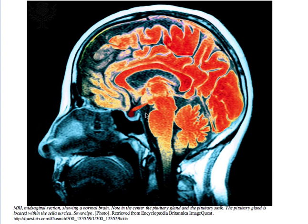A mid-sagittal section of the human brain shows the master control switch, which regulates many processes in sexually mature females. A chemical message from the anterior pituitary gland triggers the process of follicular development and the start of the menstrual cycle.